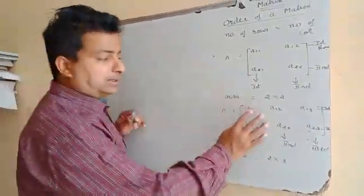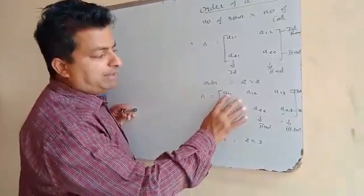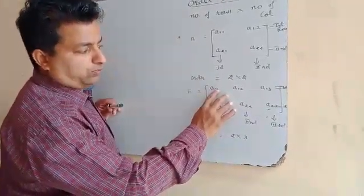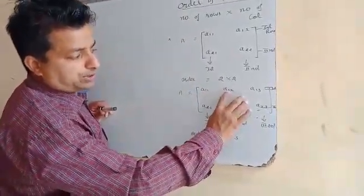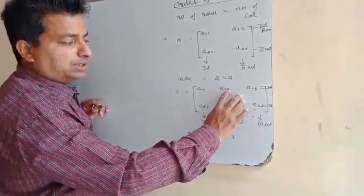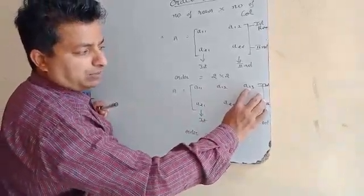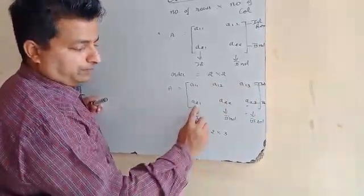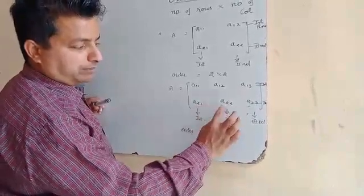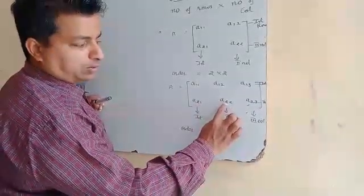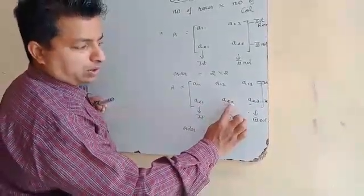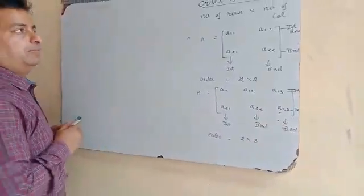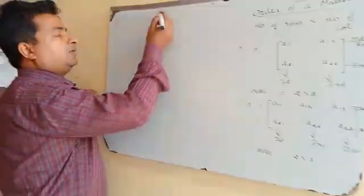A11 is called the element of the first row, first column. A12 is the first row, second column. A13 is the first row, third column. A21 is the second row, first column. A22 is the second row, second column. A23 is the second row and third column.